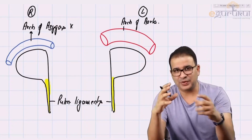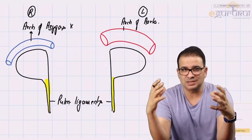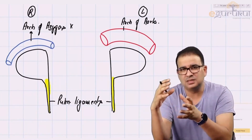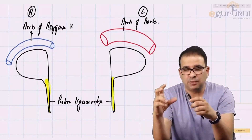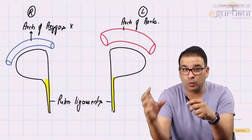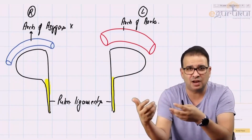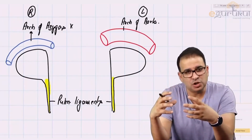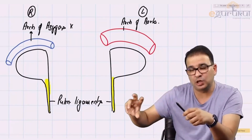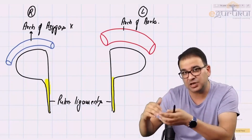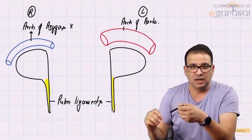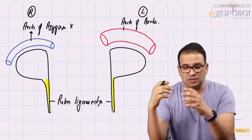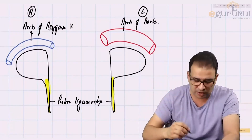Trachea divides into the two principal bronchi — the right and the left. The right principal bronchus is shorter, wider, and more vertical, which is why the chances of infection in the right lung are more common. Because the right bronchus is shorter, you will not see the right bronchus entering the lung directly — instead you see the next division, called the eparterial and hyparterial bronchus, entering the root of the lung.